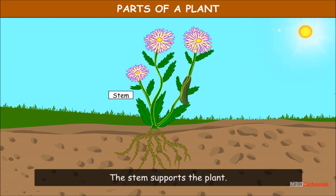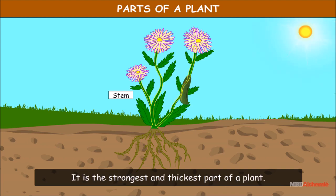The stem supports the plant. It is the strongest and thickest part of a plant.